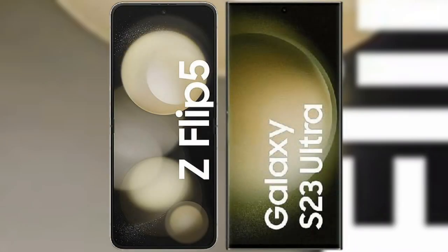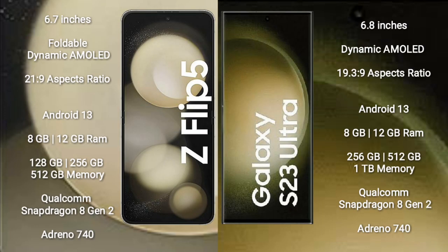I will compare the new Samsung Galaxy Z Flip 5 with Samsung Galaxy S23 Ultra. The Samsung Galaxy Z Flip 5 comes with a 6.7-inch foldable dynamic AMOLED display with an aspect ratio of 21x9. The Samsung Galaxy S23 Ultra comes with a 6.8-inch dynamic AMOLED display with an aspect ratio of 19.3x9.